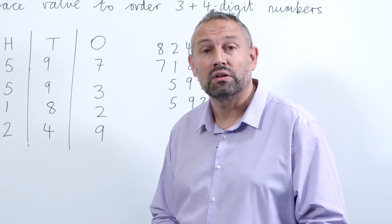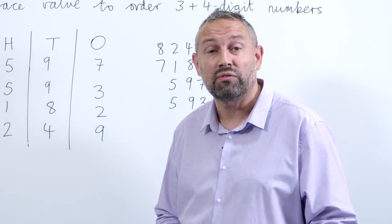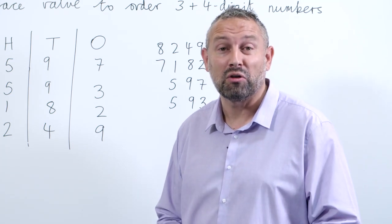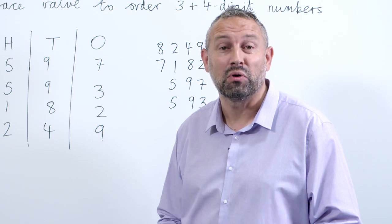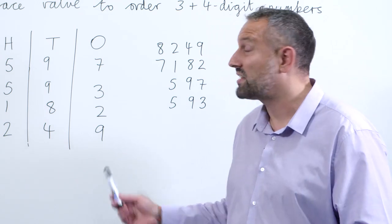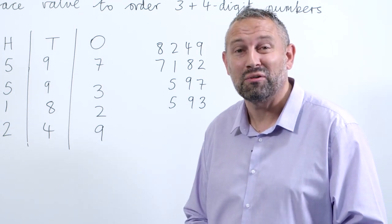Now an idea that you can do with your children is to look at numbers that have got the same digits but in a different order—654, 456, etc.—and see if they can play around with those numbers and order them from largest to smallest or from smallest to largest, which would be ascending. And that's how we can use place value to order three and four digit numbers.